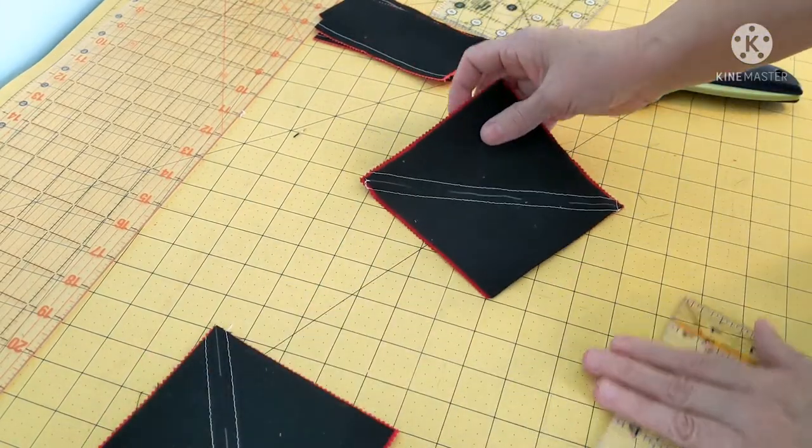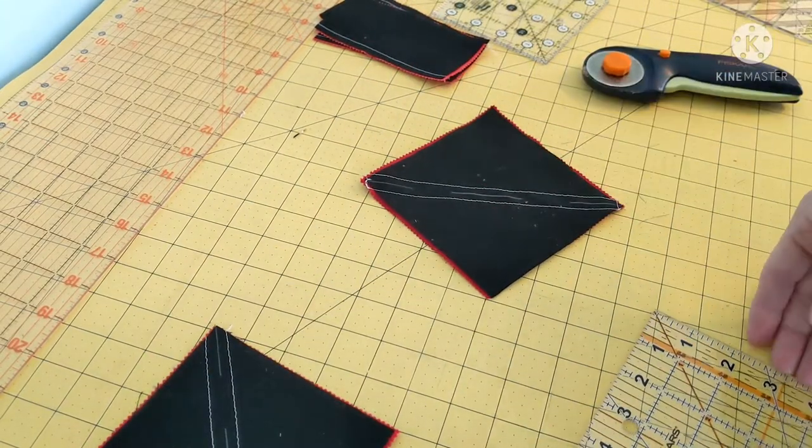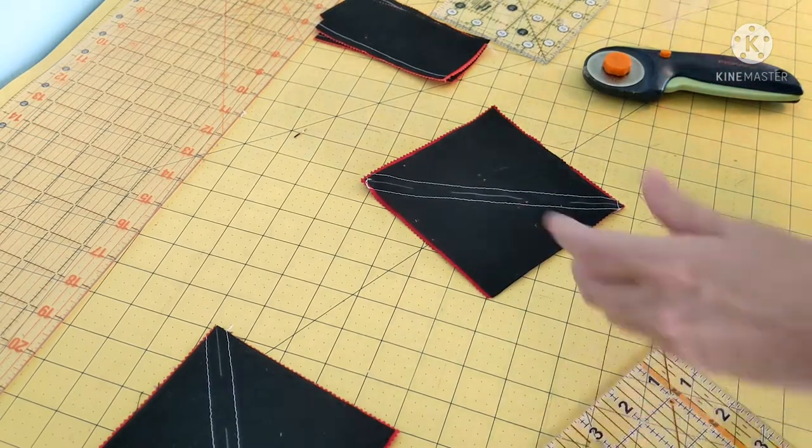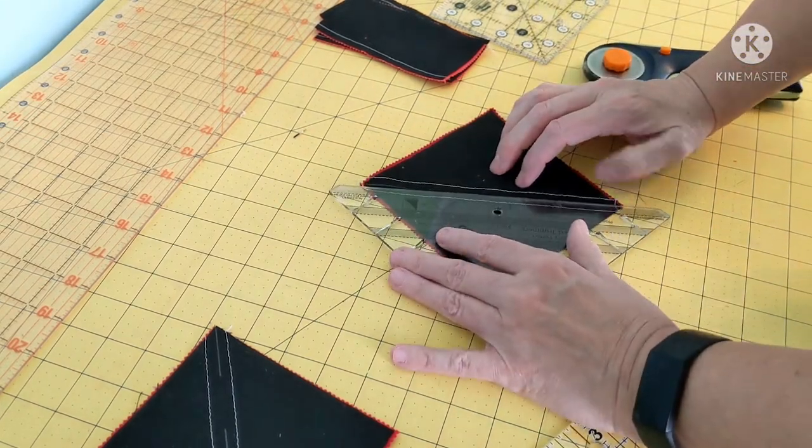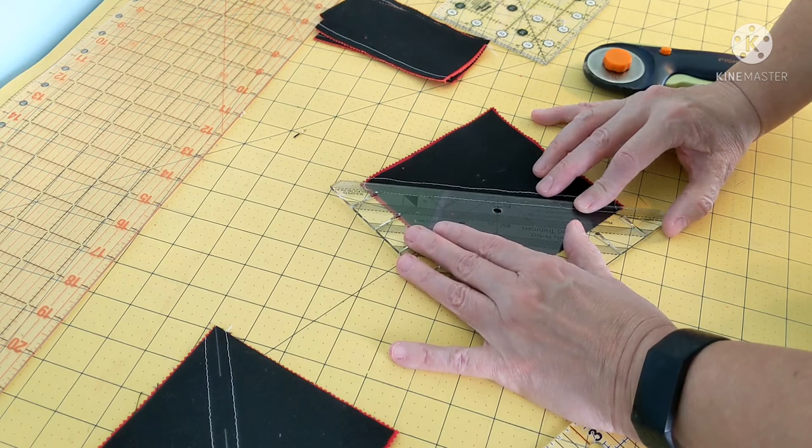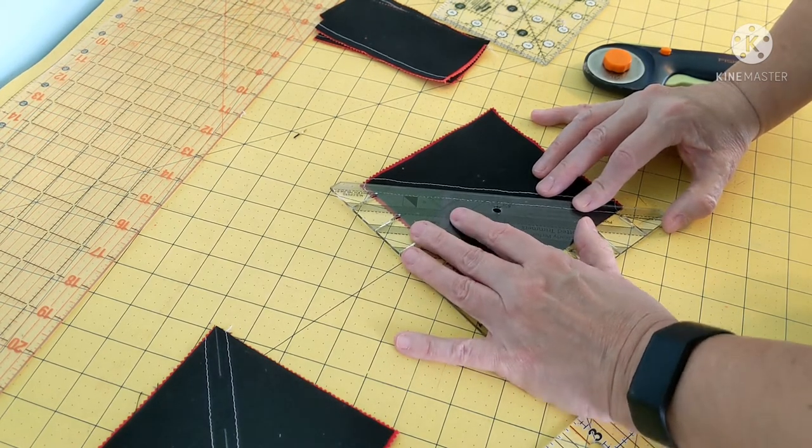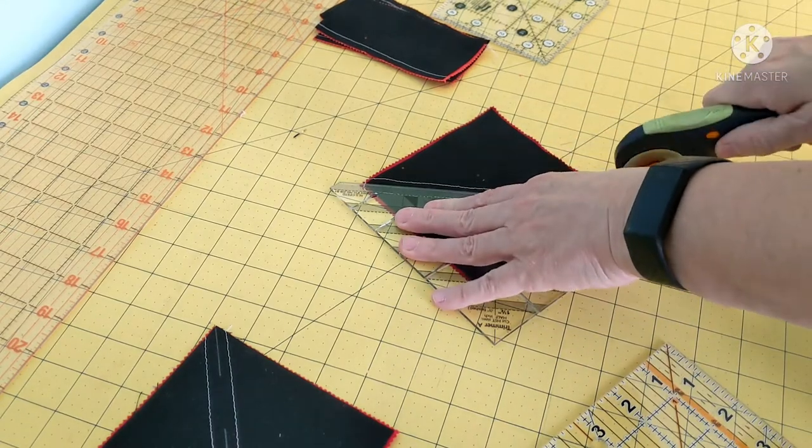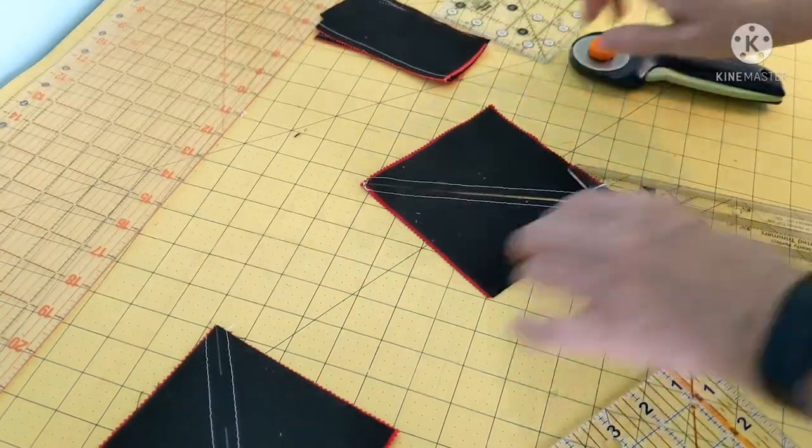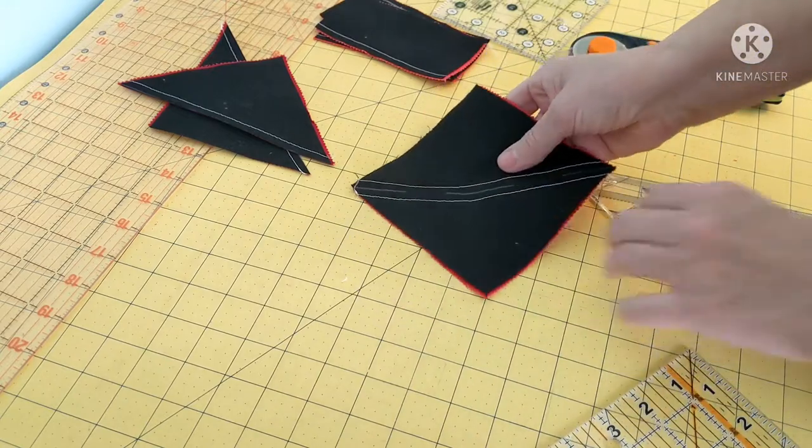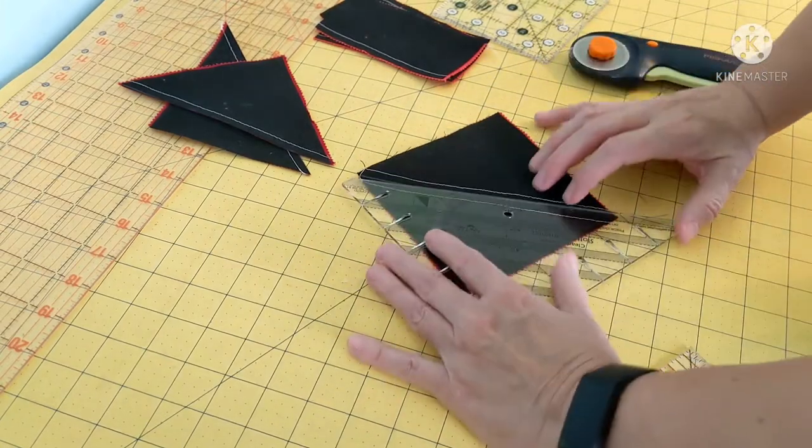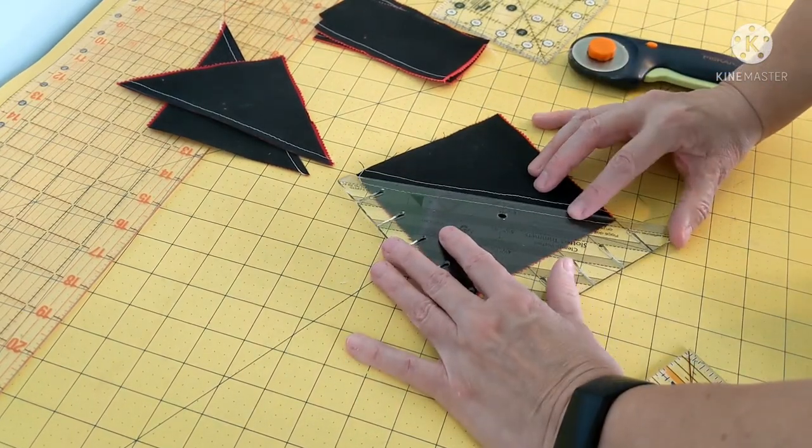Then we're going to cut down our diagonal. Just line up on that and cut this one in half as well on the diagonal.